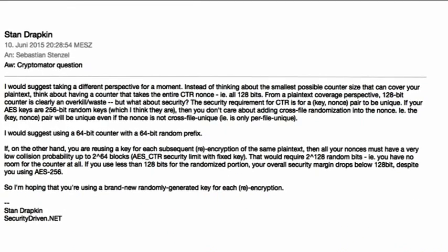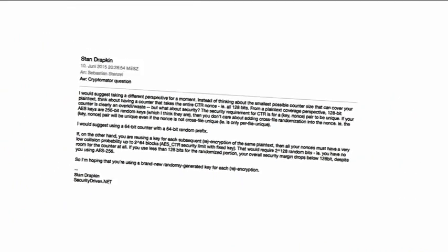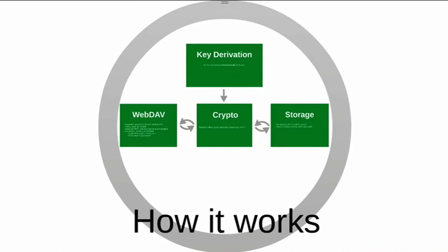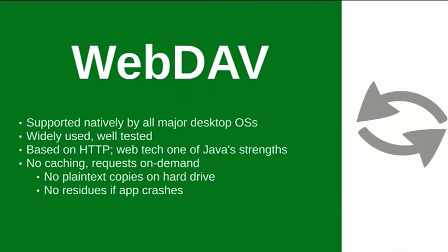So how does Cryptomator work at a high level? There are four or five components if you count the user interface. There's a WebDAV interface as the front end that the user interacts with, providing a virtual hard drive onto which one can drag and drop files. There's also something cryptographic in the middle, a storage device where all encrypted files are written to, and something called key derivation — more on that in a second.